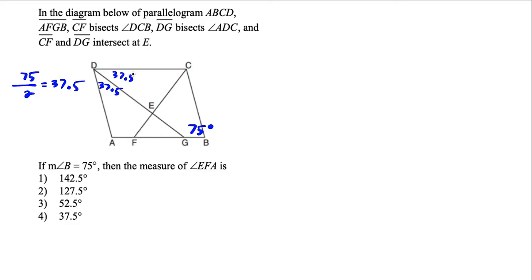Now some other information we could fill in here is that consecutive angles of a parallelogram are supplementary. So that means that the measure of angle A would be 180 minus 75, which would be 105 degrees. So we could write that in.